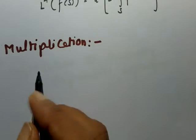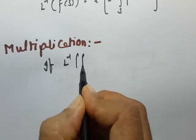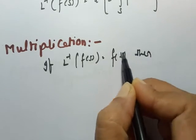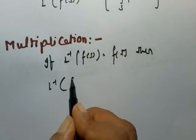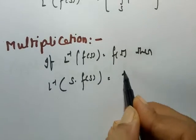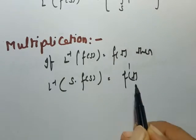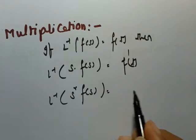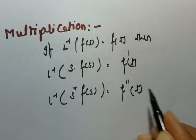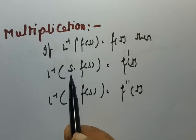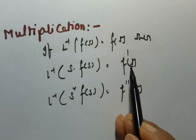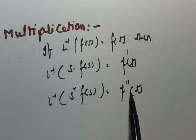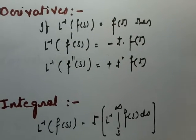When it comes to multiplication: if inverse Laplace transform of F(s) is equal to f(t), and one s is multiplied with F(s), then we have to differentiate f(t) one time. If it is multiplied by s², then we have to differentiate for two times. So if one s is multiplied, derive f(t) once; if s² is multiplied, derive f(t) twice.